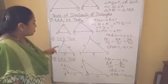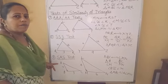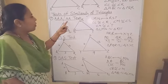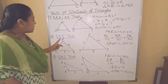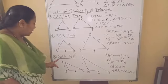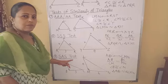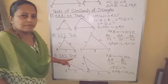So these are the three tests of similarity of triangles: AAA test or AA test, SSS test, and SAS test. Ok, followed?